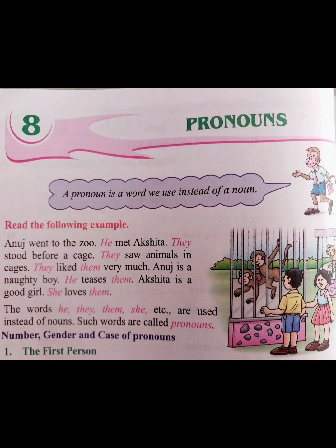Let's read the paragraph. Anuj went to the zoo. He met Akshita. In this sentence, 'he' is a pronoun which is used in the place of noun Anuj. Let's see the next sentence. They stood before a cage. In this sentence also, 'they' is a pronoun which is used in the place of nouns Akshita and Anuj.